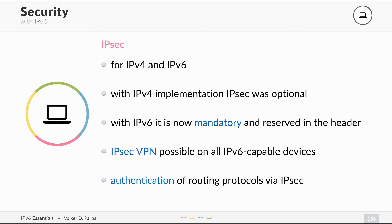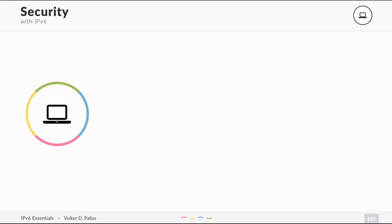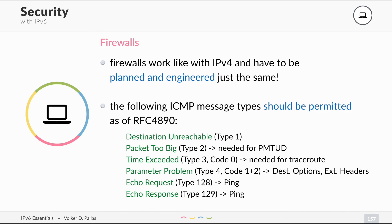Apart from that, nothing has changed — IPsec is still the same. Firewalls work just like with IPv4 and they have to be planned and engineered. You cannot just set up a firewall and think you're safe. Read about it, do a good configuration, and check all of your access lists. According to best practices, the following ICMP messages should be permitted as per RFC 4890.